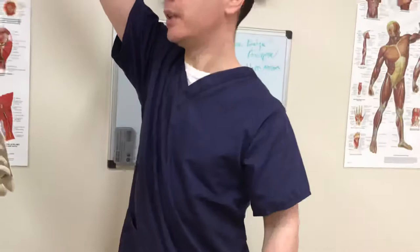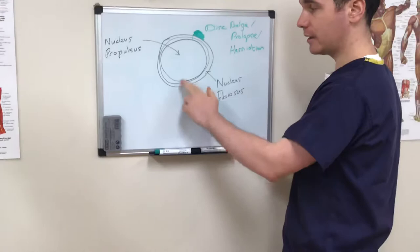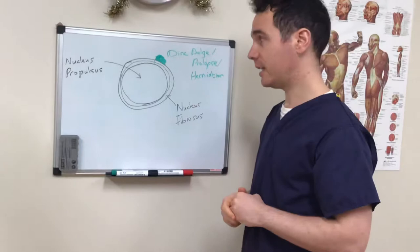So this is the front of the disc and this is the back of the disc. Now again, your disc is made up of your fibrosis, which are the rings around the disc, and the nucleus pulposus, which is the gel-like substance contained in here.